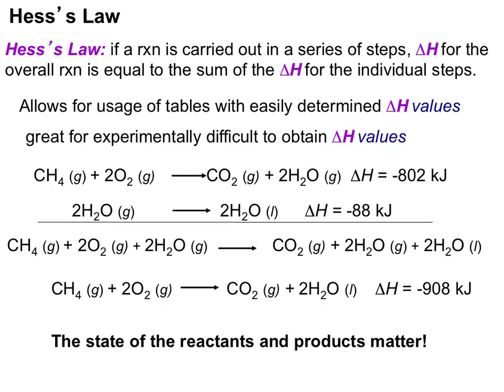The overall reaction I actually want to solve the enthalpy for is the one with liquid H2O, but I only have information from these two reactions that may have been carried out experimentally. The neat thing about Hess's law is that I can use these two equations to get the enthalpy of that equation. The thermochemical equations must sum to the overall equation you're looking for. If I take all the reactants from each equation and add them together, I get the left-hand side; doing the same with products gives the right-hand side.